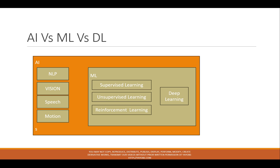Within machine learning, there is supervised learning, learning through trial and error, unsupervised learning, reinforcement learning, and sometimes hybrid approaches.